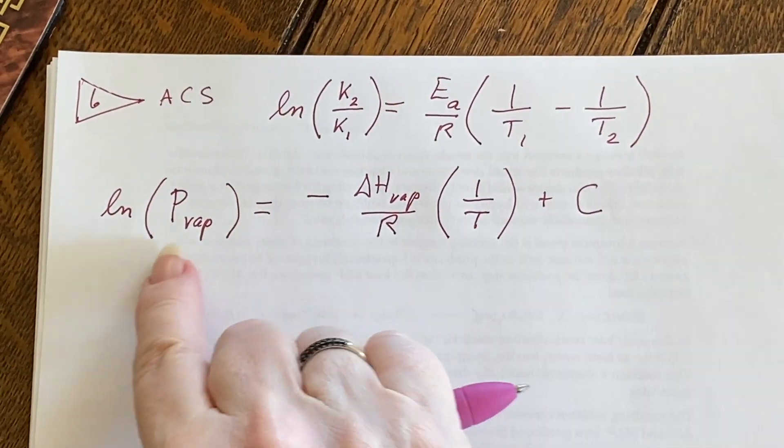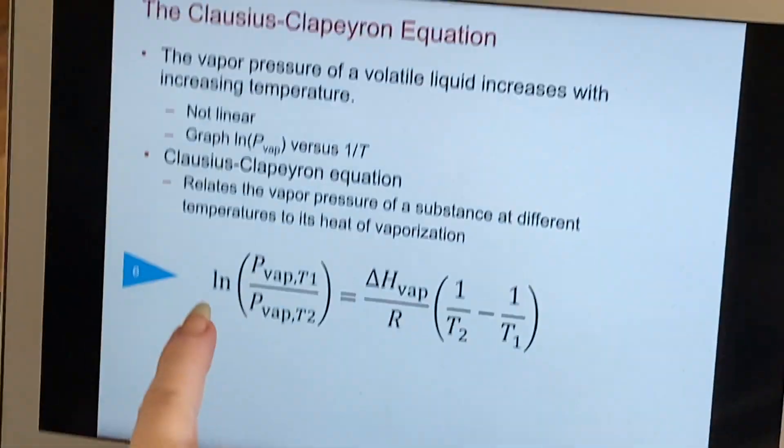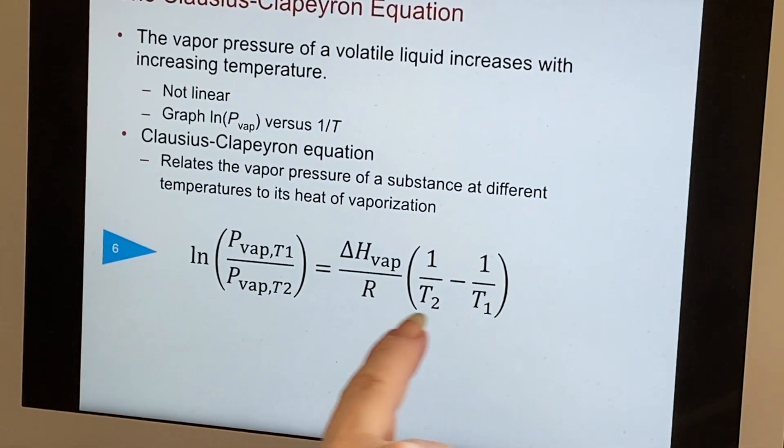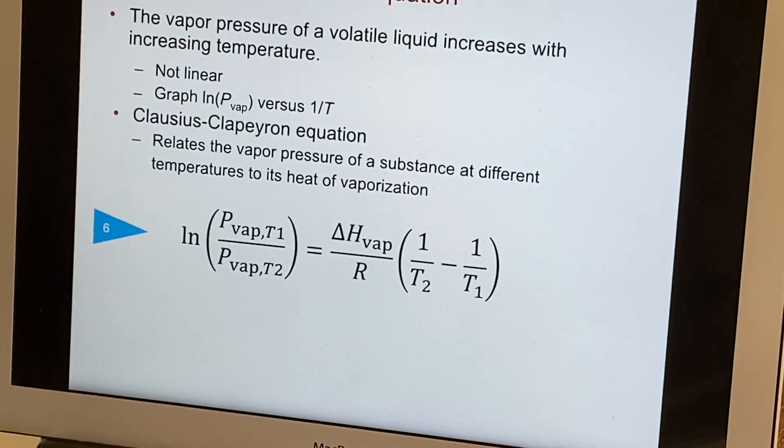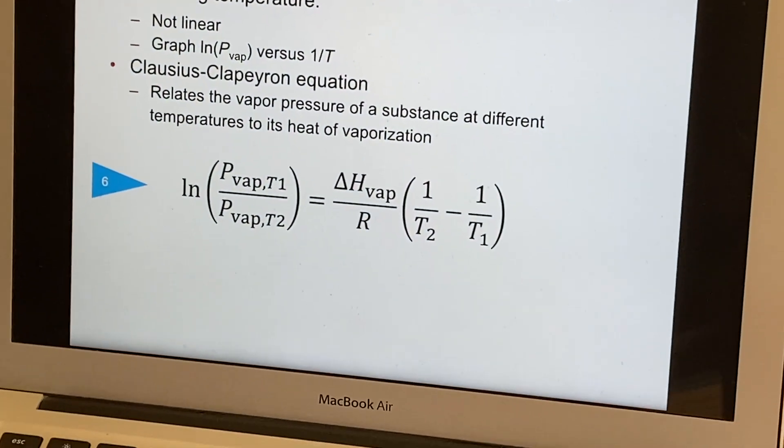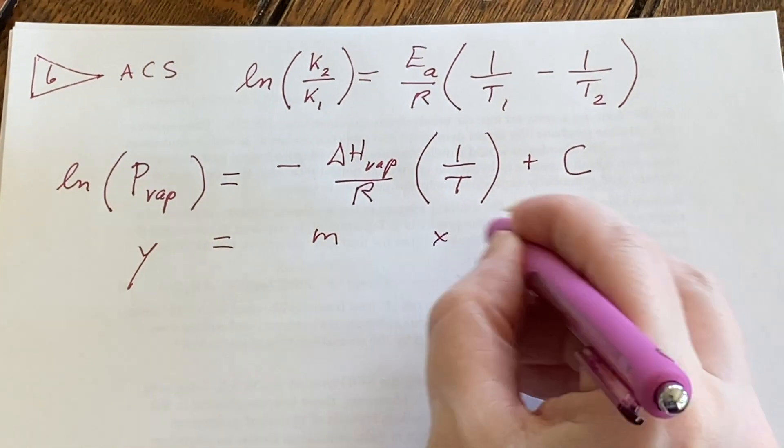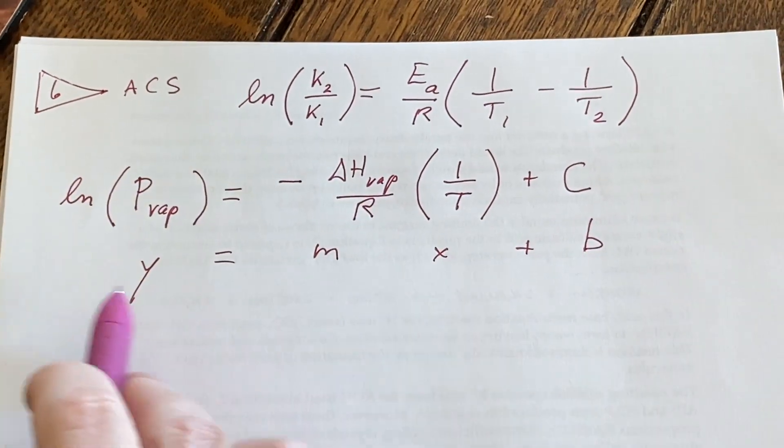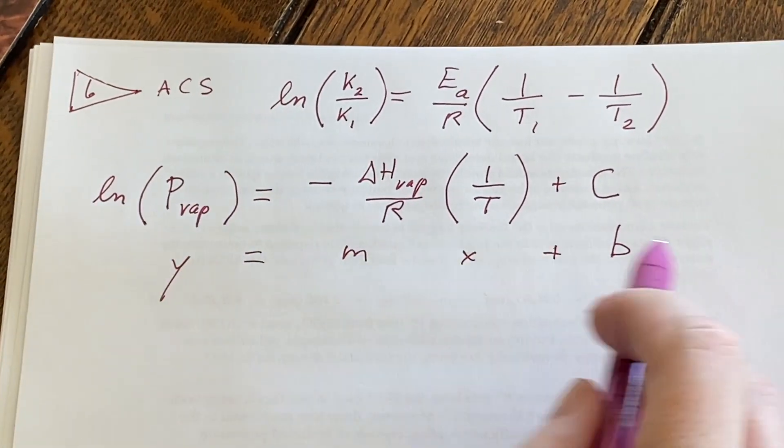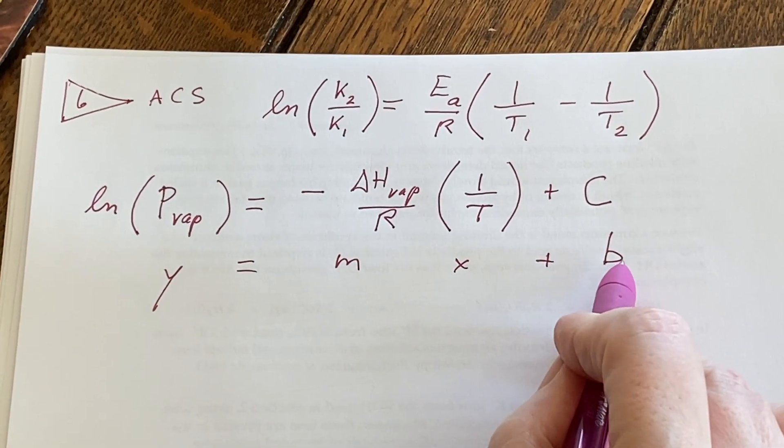And the difference between this equation and this equation is something that you should hopefully remember from algebra. This would be Y equals MX plus B. So this would be your slope-intercept form of an equation.